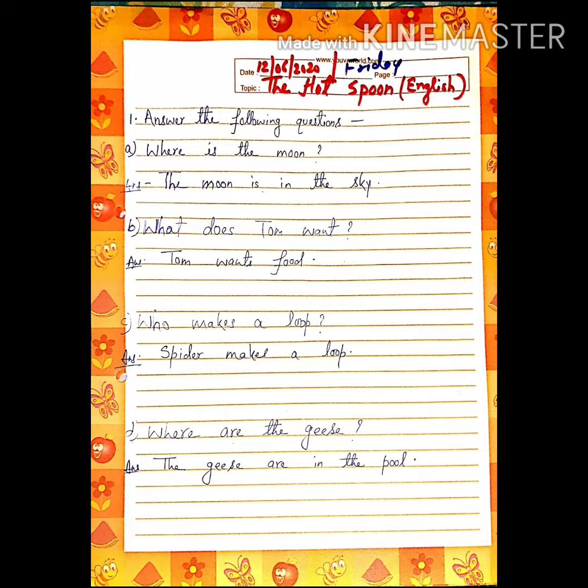Number 1. You have to write: Answer the following questions. A-N-S-W-E-R, answer the following, F-O-L-L-O-W-I-N-G, questions Q-U-E-S-T-I-O-N-S. Question number 1 is: Where is the moon? The moon is in the sky.